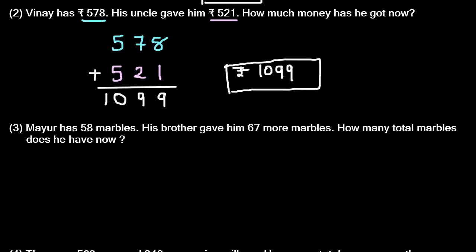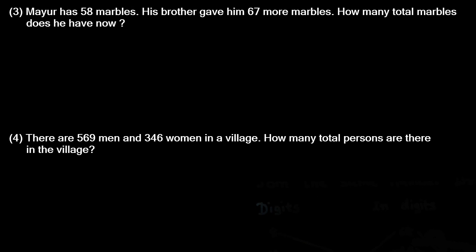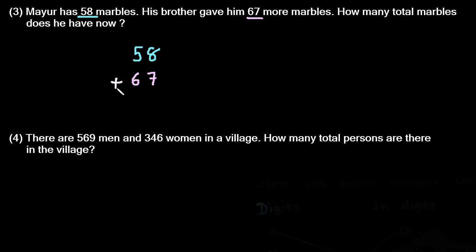Let us solve some more questions — question number 3 and 4. Again, pause the video and try to solve these 2 questions. Now let us solve them together. Mayur has 58 marbles. His brother gave him 67 more marbles. How many total marbles does he have now? We want to find the total number of marbles, so again we have to do addition. First he had 58 marbles, then his brother gave him 67 more, and we want to find the total.